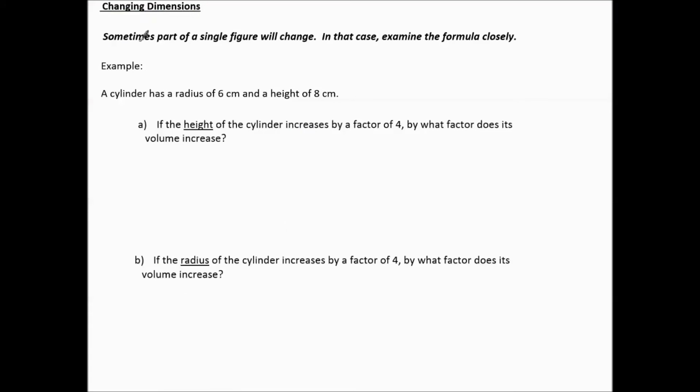Changing dimensions. Sometimes part of a single figure will change. In that case, examine the formula closely. For example, a cylinder has a radius of 6 centimeters and a height of 8 centimeters. Part A: If the height of the cylinder increases by a factor of 4, by what factor does its volume increase? So notice that they're talking about the volume of a cylinder. Going to our formula sheet, we find the formula for volume of a cylinder is V equals pi r squared h.